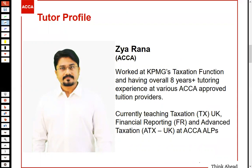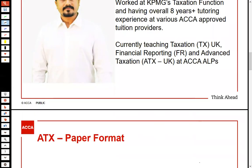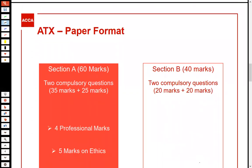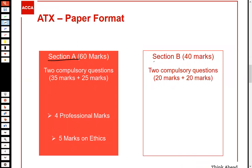After the introduction, let me give an overview of the paper format. The ATX paper is divided into two sections: Section A and Section B. Section A is a 60-mark question in long-form scenario format, normally consisting of two to three exhibits — roughly two to three pages. Section B is also scenario-based but in short form, normally consisting of one exhibit of about one and a quarter pages including the requirement.